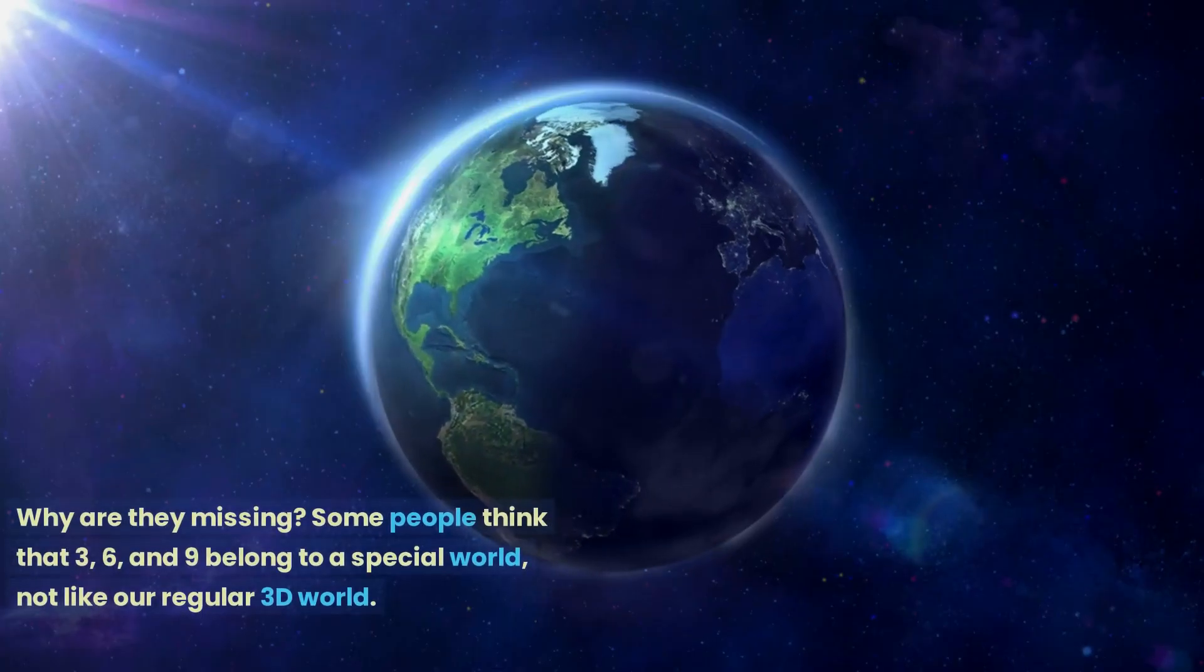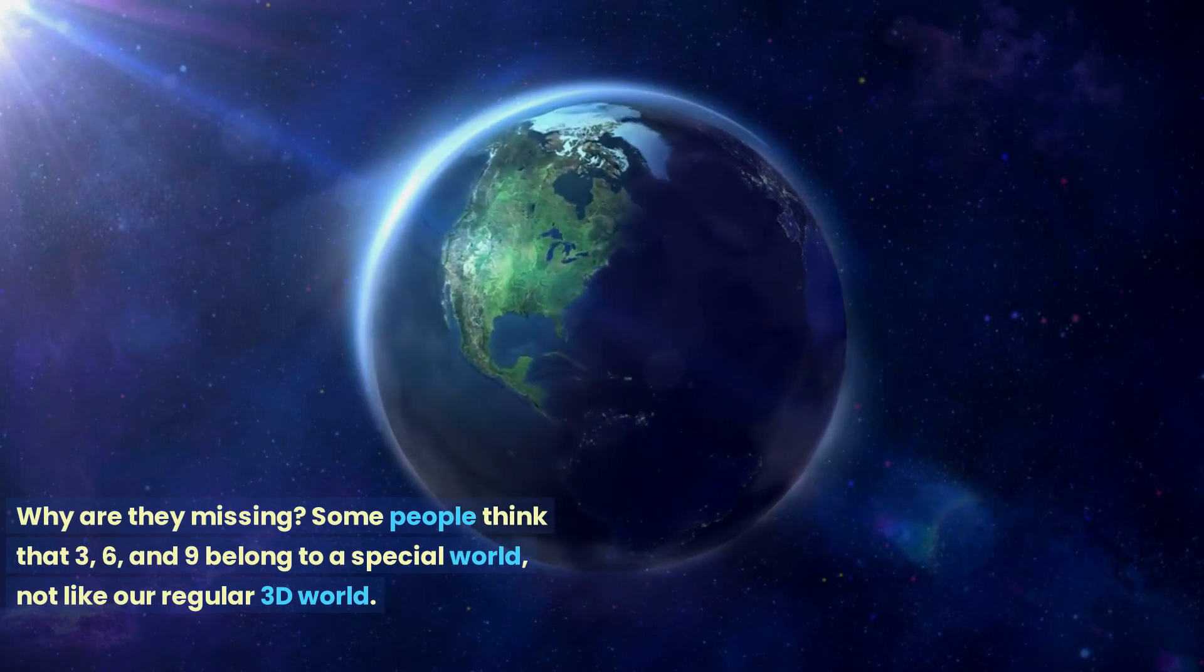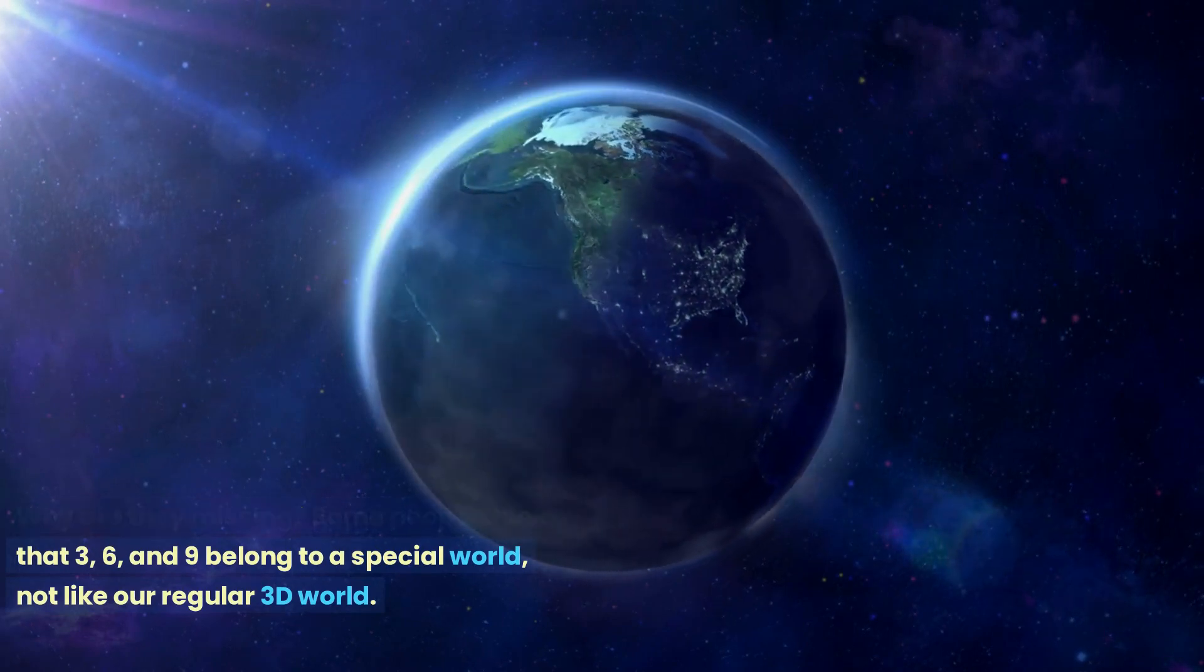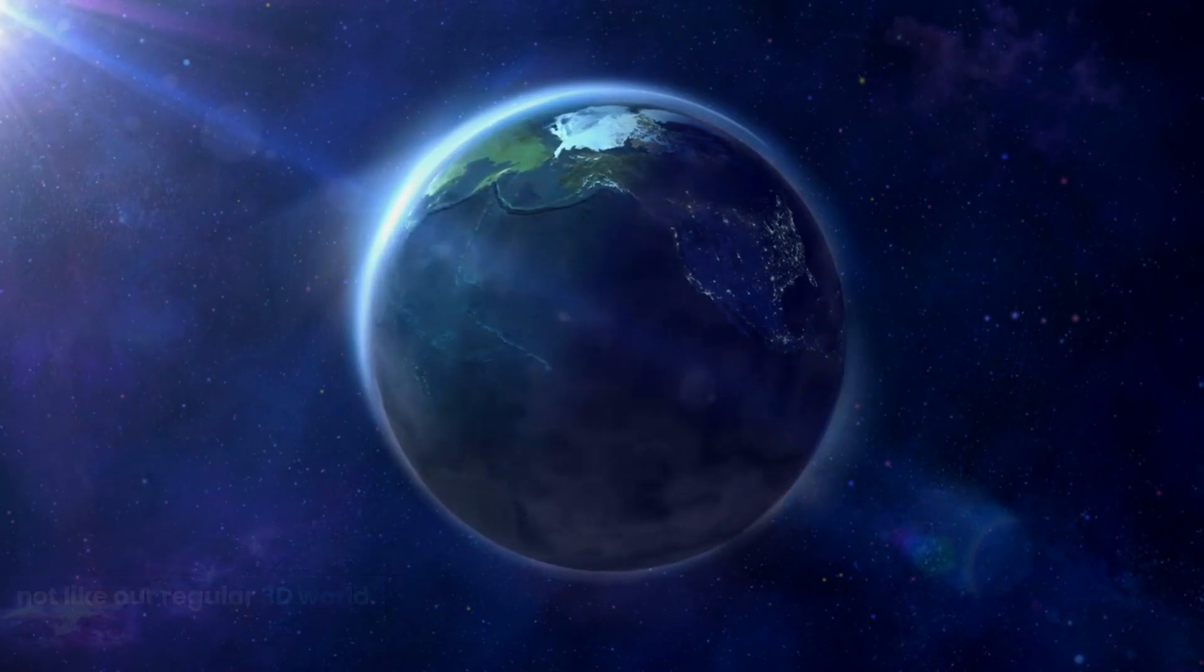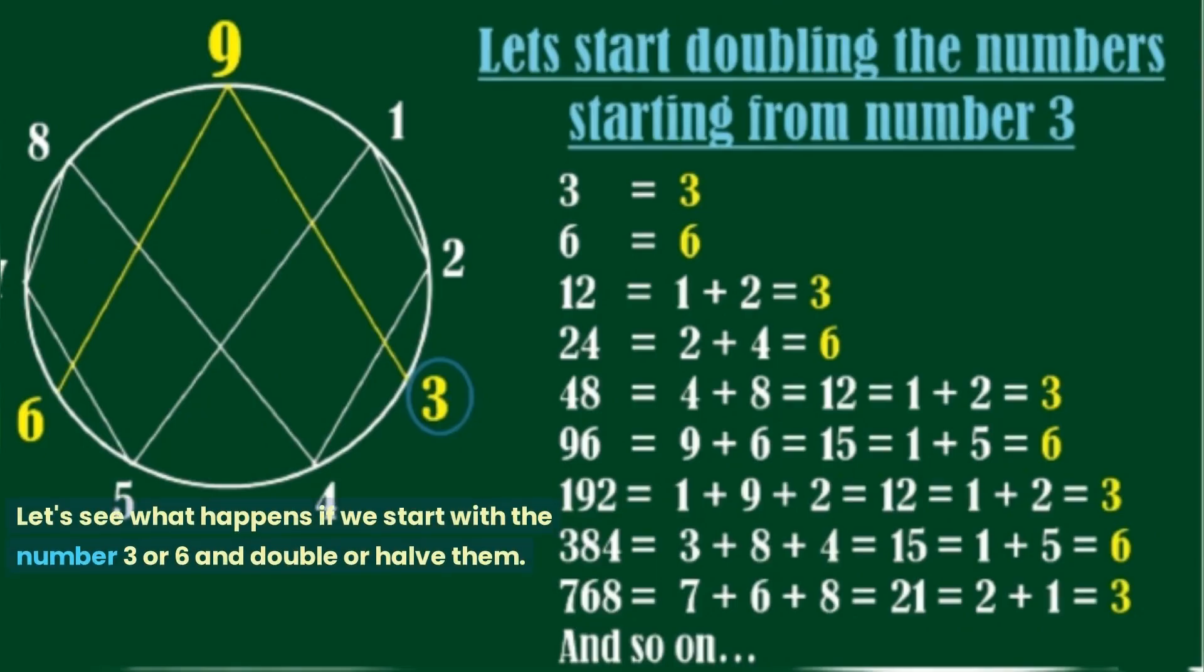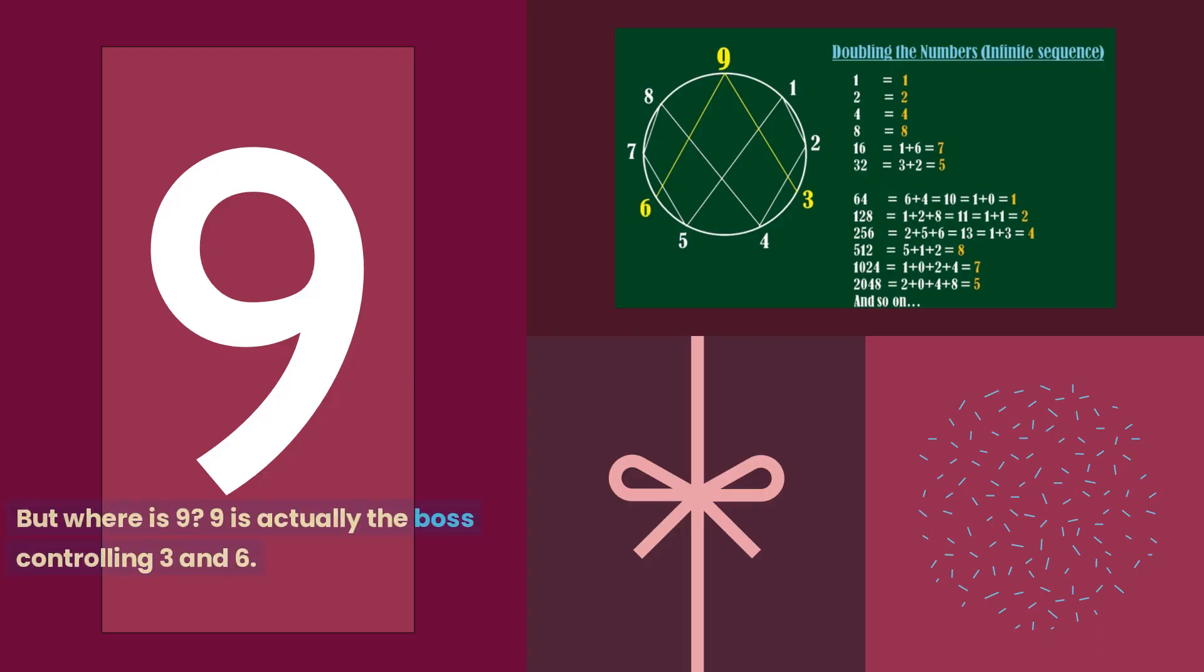Some people think that 3, 6, and 9 belong to a special world, not like our regular 3D world. Let's see what happens if we start with the number 3 or 6 and double or halve them. We only get the numbers 3 and 6. But where is 9? 9 is actually the boss controlling 3 and 6.